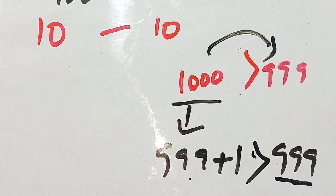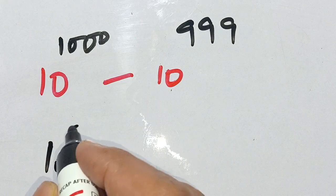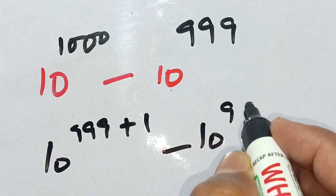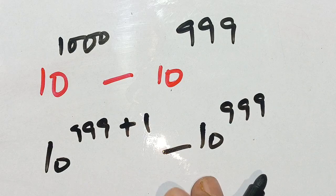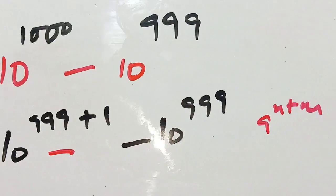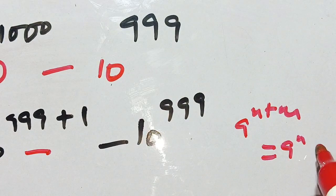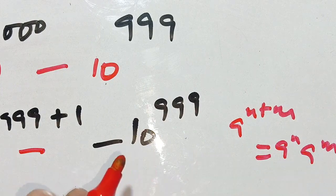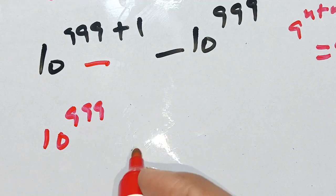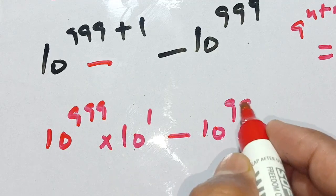Thus our problem becomes: 10 raised to power 1000 can be written as 10 raised to power (999 plus 1), minus 10 raised to power 999 as it is. This is in the form of a raised to power (n plus m), which equals a raised to power n times a raised to power m. Applying this identity, we get 10 raised to power 999 times 10 raised to power 1, minus 10 raised to power 999.